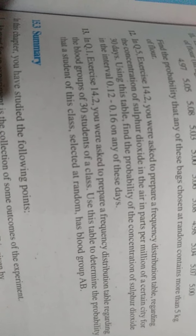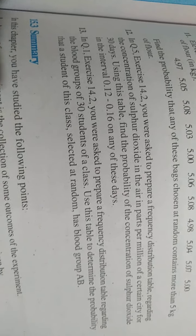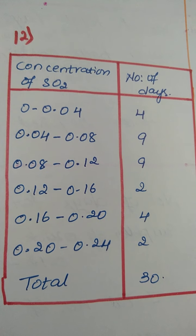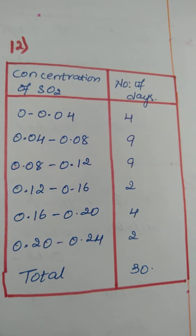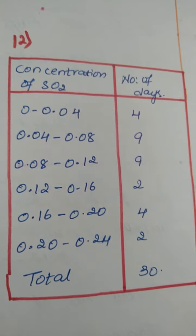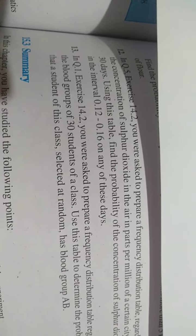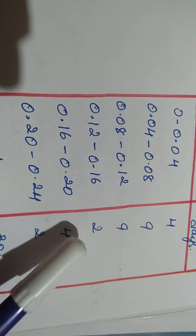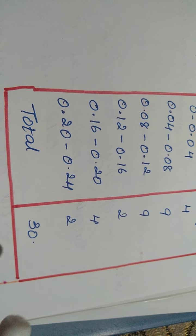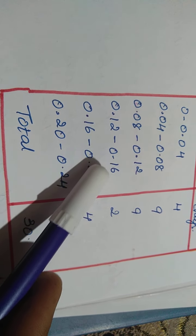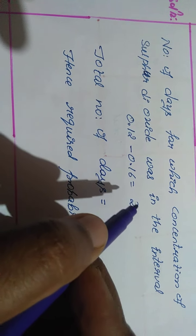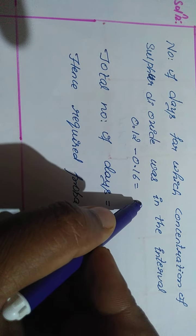Here is your 12th question children. For this, you have to again refer question number 5 of exercise 14.2. I have already referred and made it in the form of a table. This is your required table children. The ungrouped data has been grouped here. We have to find the probability for the range 0.12 to 0.16. Here on tabulating, I got 0.12 to 0.16 as 2. Total number of days is 30, so 2 by 30 will be my solution.